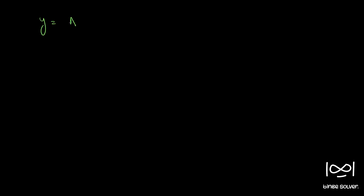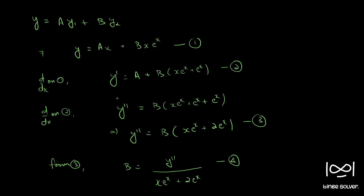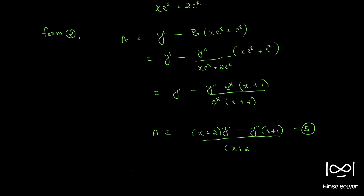Starting a new page, y = a·x + b·xe^x. Substituting a from equation 5 and b from equation 4 into equation 1, we get y = x · [(x+2)y' - (x+1)y''] / (x+2) + [y''/(xe^x + 2e^x)] · xe^x.